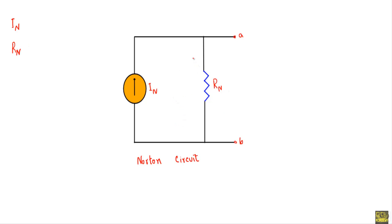When a circuit contains a dependent source, we calculate Rn using the formula: open circuit voltage Vab divided by short circuit current Isc. This is the Thevenin voltage (open circuit voltage Vth) divided by the short circuit current, also known as the Norton current In.